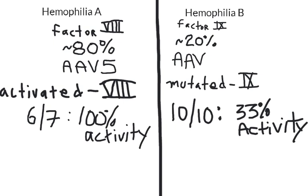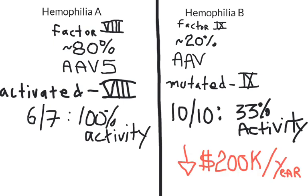So, how effective is that 33%? Well, those 10 out of 10 patients used about $200,000 a year less of recombinant factor IX than they would have otherwise, so that's a very significant result.